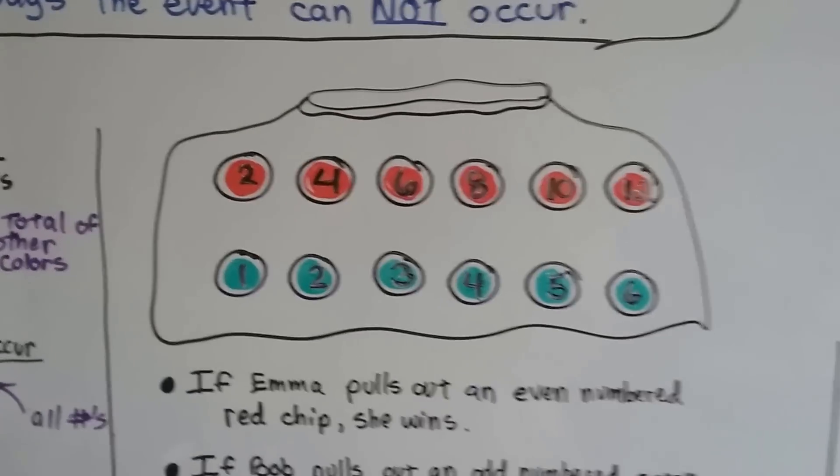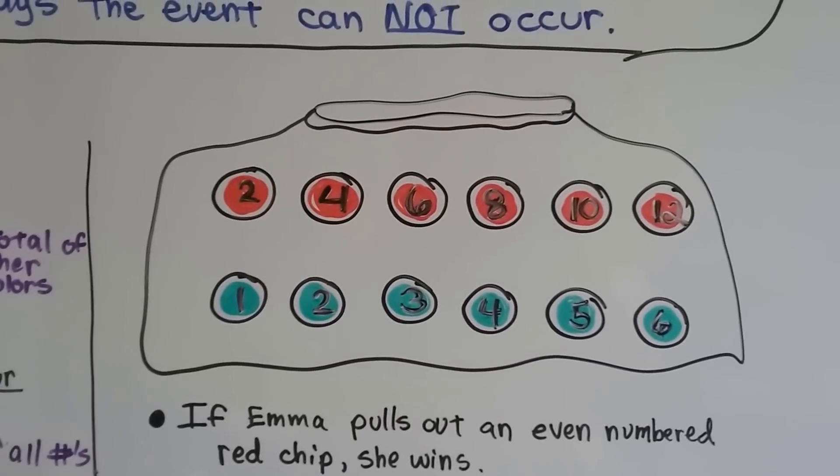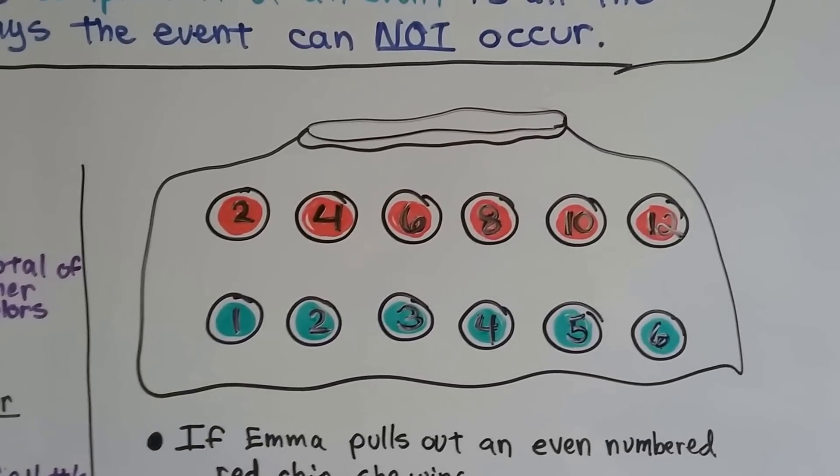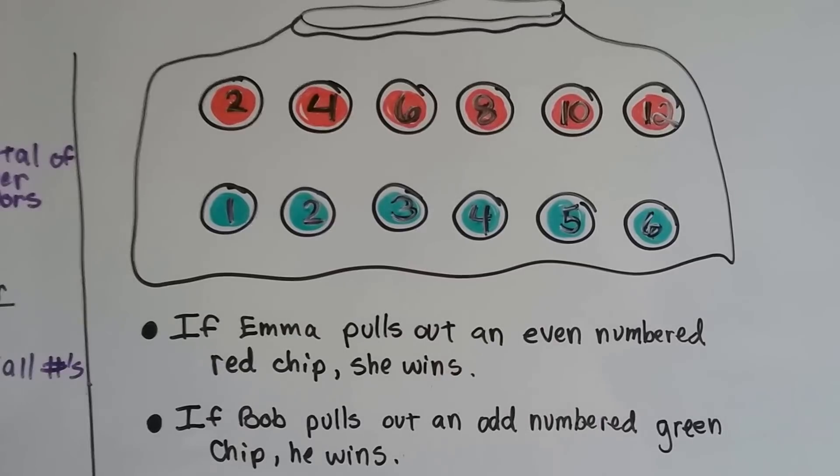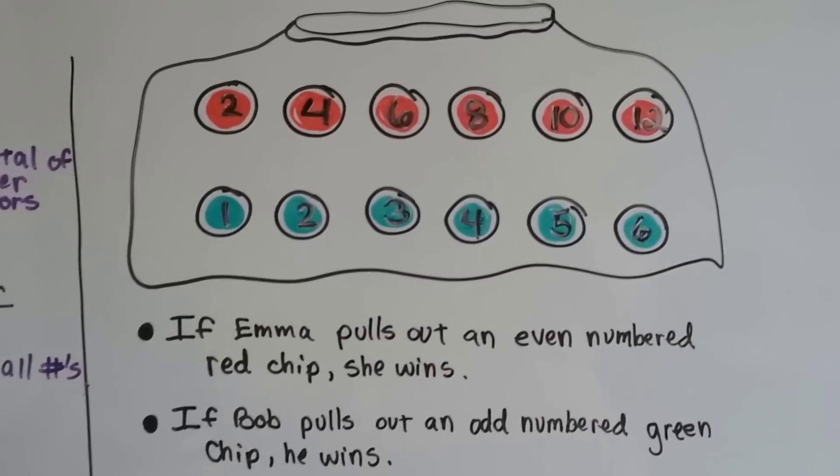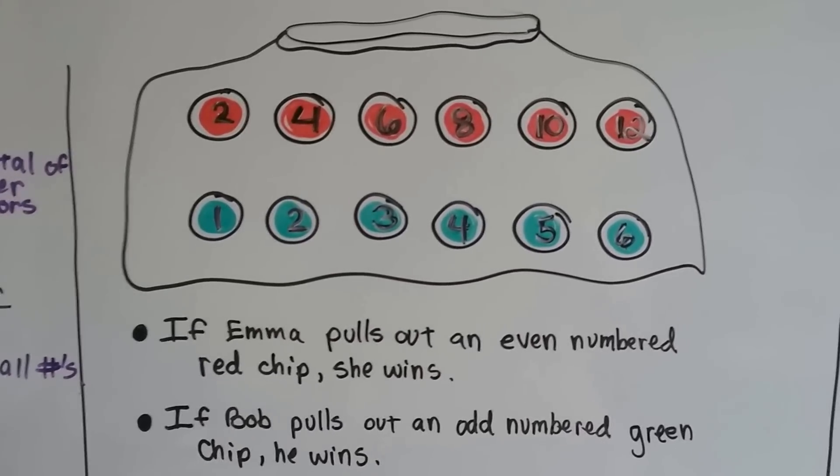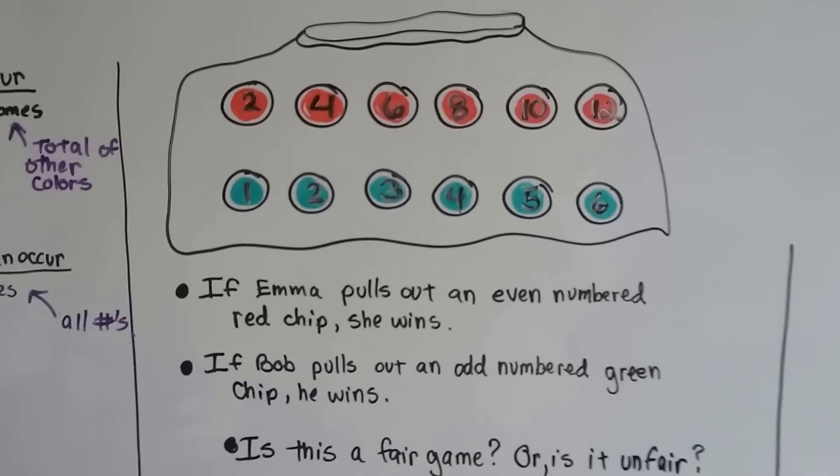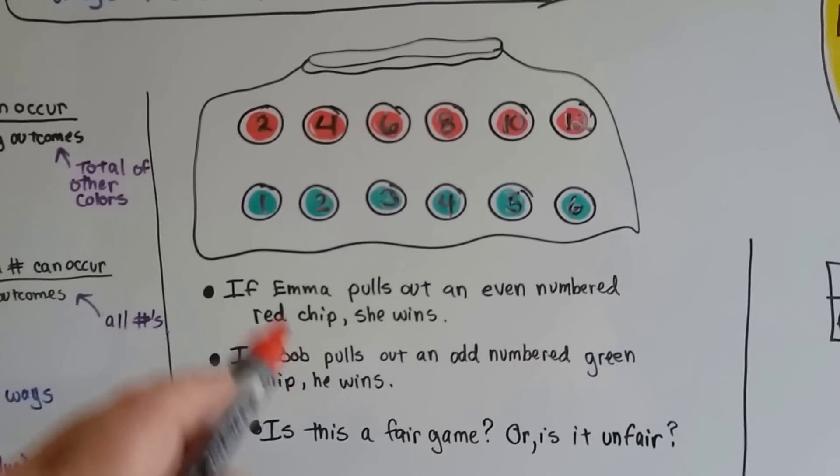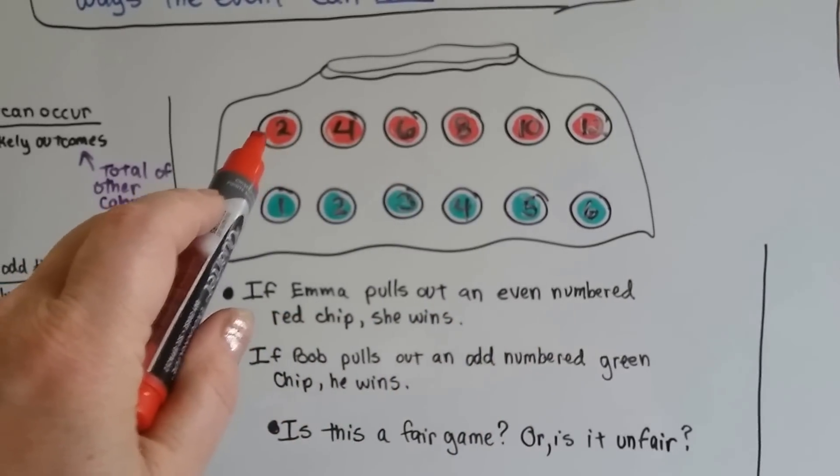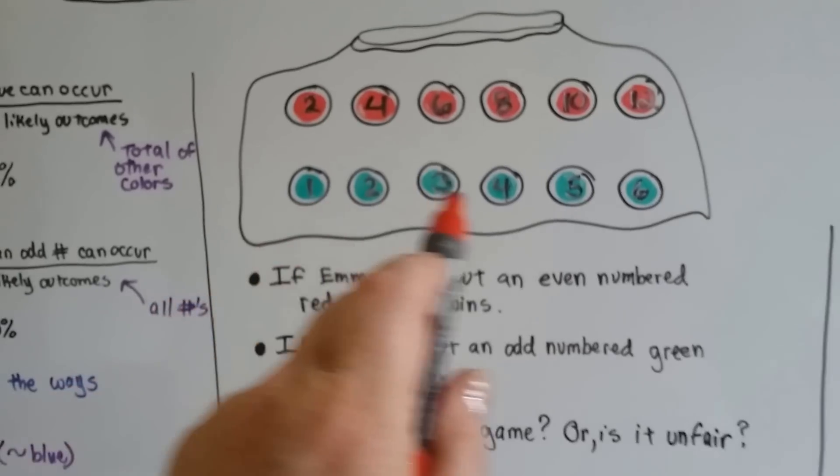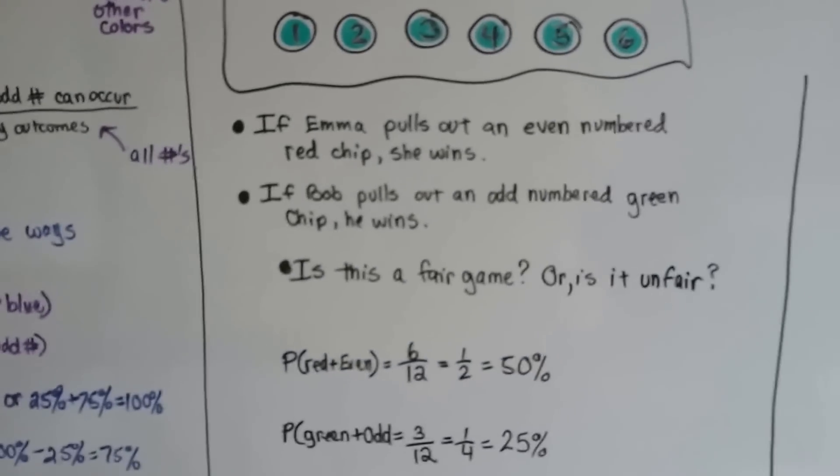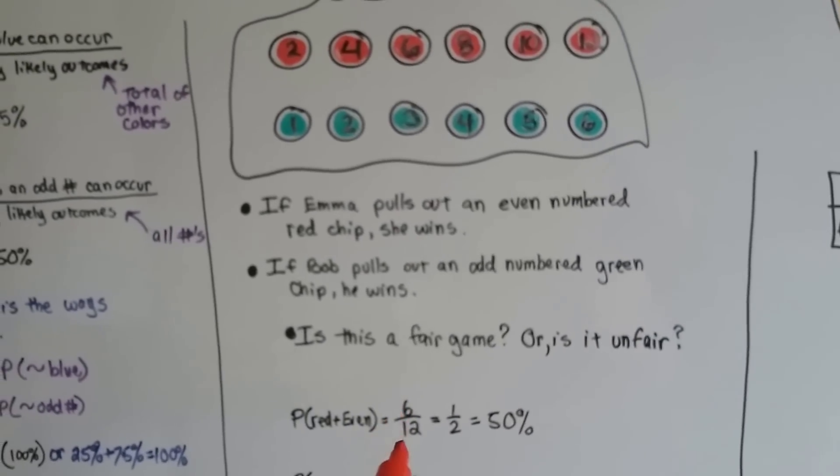Alright, I have a bag, and it's got 12 chips in it. 6 are red, 6 are green. All the red ones have even numbers written on them, and all the green ones have the numbers 1, 2, 3, 4, 5, and 6 on them. If Emma pulls out an even-numbered red chip, she wins. If Bob pulls out an odd-numbered green chip, he wins. Is this a fair game? Is this fair to Bob? Or is it unfair? What are the chances that Emma's going to pull out a red, even chip? All of the red ones are even. But look at the green odd ones. There's only 1, 2, 3 odd ones that are green.